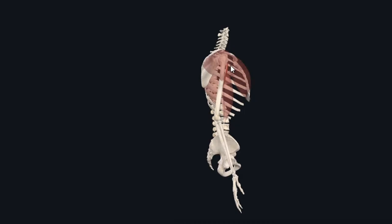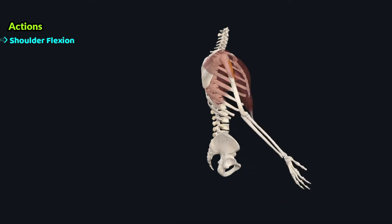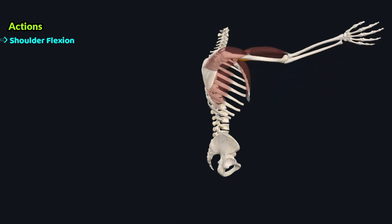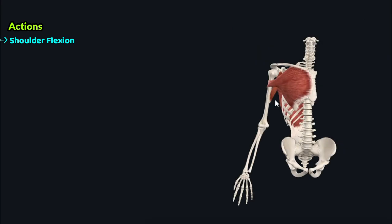The coracobrachialis acts to produce movements at the glenohumeral joint. One of its actions is shoulder flexion, through which it flexes the shoulder at the glenohumeral joint. This muscle can also weakly contribute to shoulder adduction, adducting the arm at the glenohumeral joint.